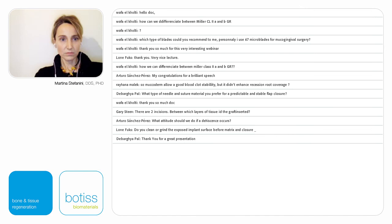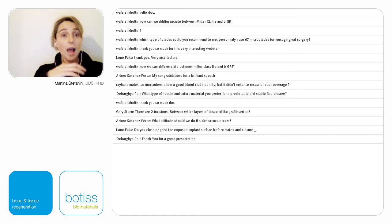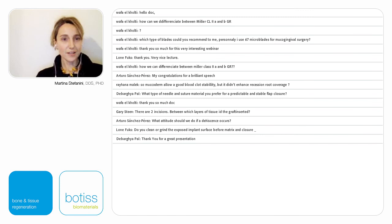Regarding implant treatment: I suggest using the collagen matrix when you need to increase thickness in cases without apicocoronal displacement of the gingival margin around the implant — but in cases where you have a concavity and need to increase soft tissue thickness to restore correct crown emergence profile. I want to thank all of you for listening to my speech, and I hope to have the chance to meet you personally in the future. Good luck with the treatment of your gingival recessions or soft tissue deficiencies around implants.